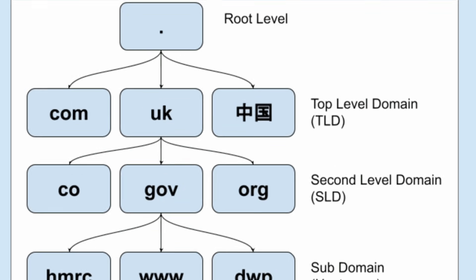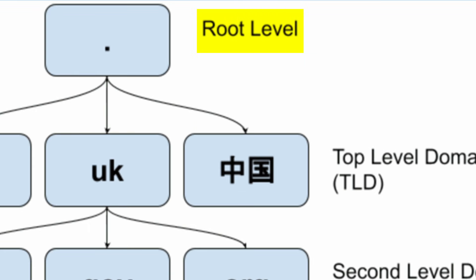DNS works in a hierarchical way, going from top to bottom. At the very top you have your root level. In this level we have the servers that manage the top-level domains — they know where to find your .com, .org, .net, or .gov. One step down and we find the top-level domains themselves that we spoke of earlier.